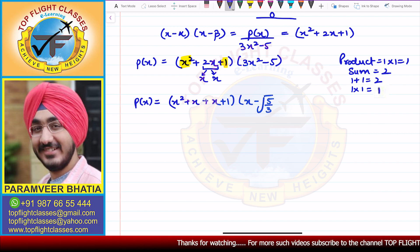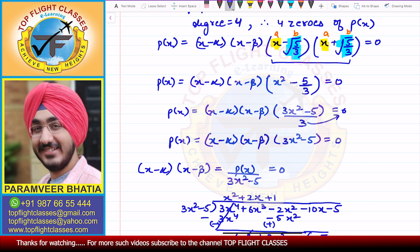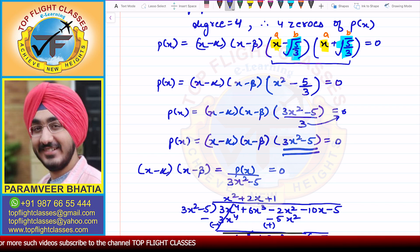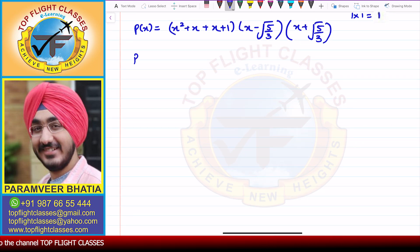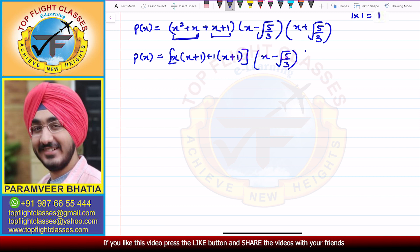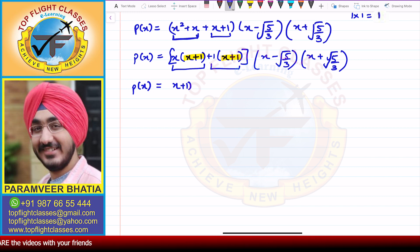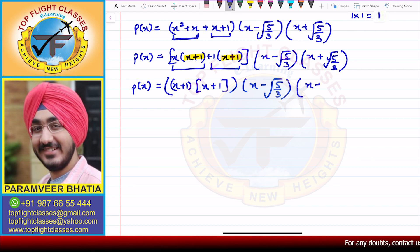We have x - √(5/3) and x + √(5/3) from 3x² - 5. So p(x) = x(x + 1) + 1(x + 1), multiplied by (x - √(5/3))(x + √(5/3)). Taking (x + 1) common, we get (x + 1)(x + 1), multiplied by (x - √(5/3))(x + √(5/3)).